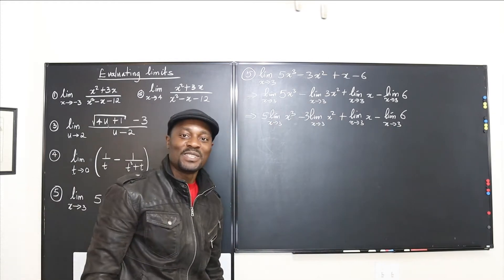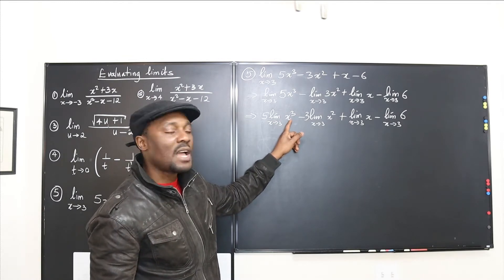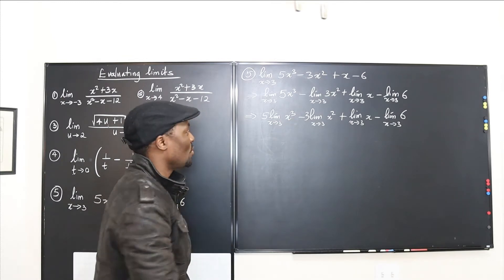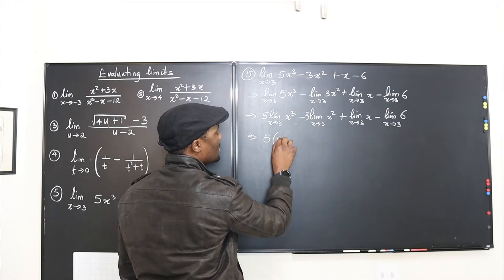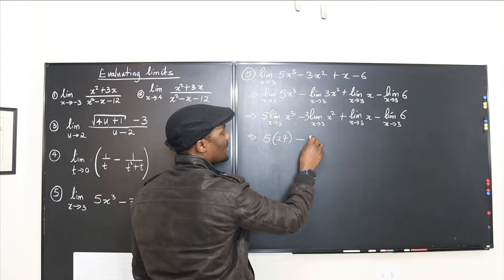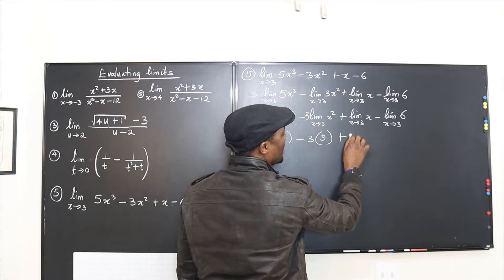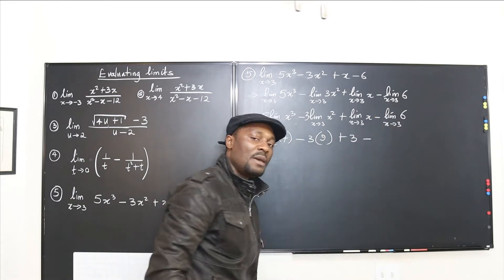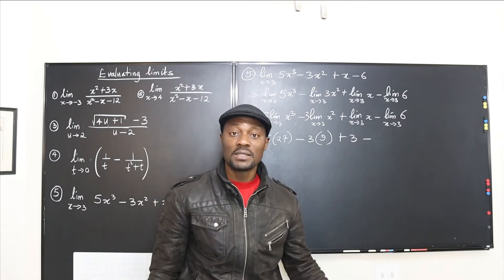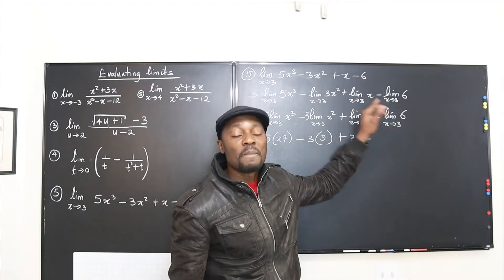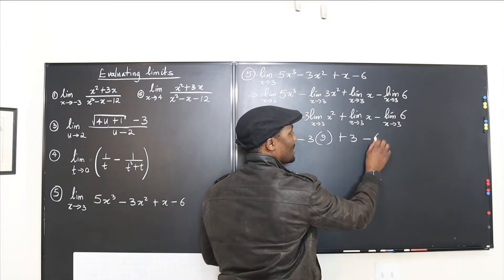Now we can do our substitution. x is going to three, so this becomes three cubed which is 27. So you have five times 27 minus three times nine, plus three, minus the limit of the constant. Constants never change — that's why they're called constants. It doesn't matter what x is approaching; if it's a constant, it stays the same number, which is six.